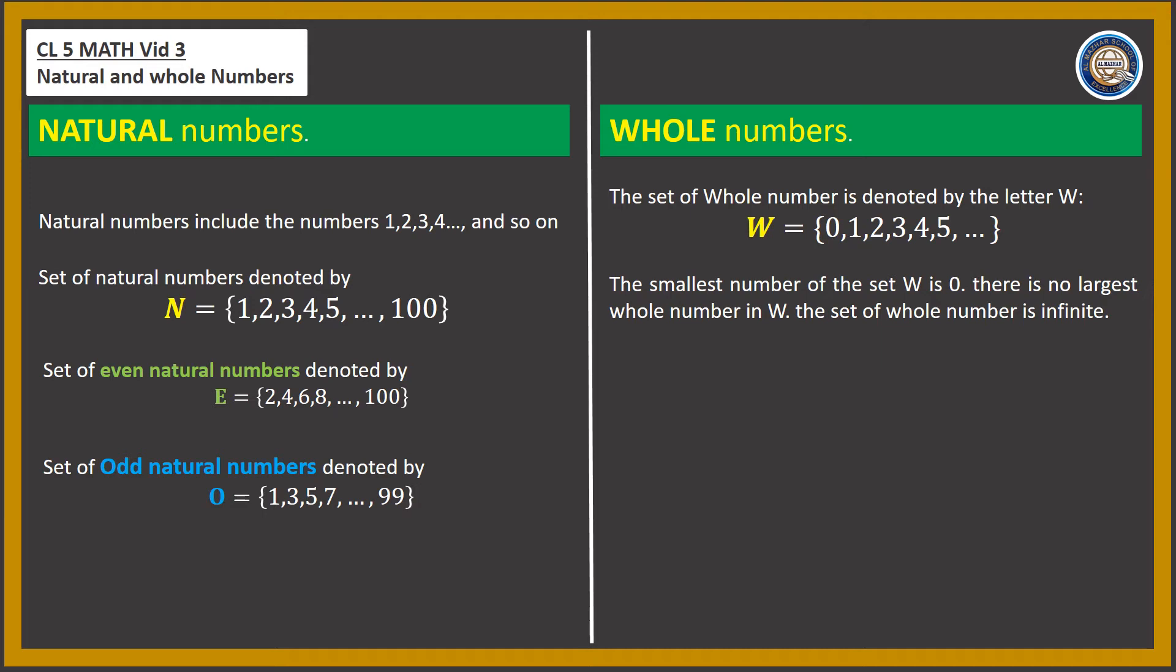We can say that all natural numbers are also whole numbers. However, not all whole numbers are natural numbers, because whole numbers include zero while natural numbers do not.